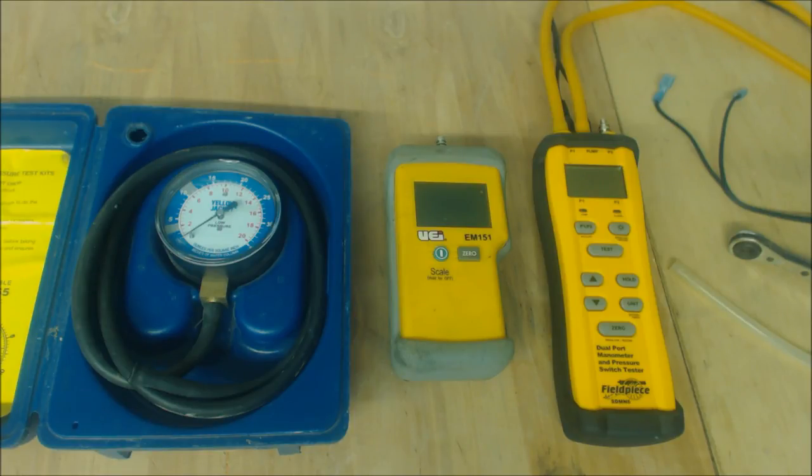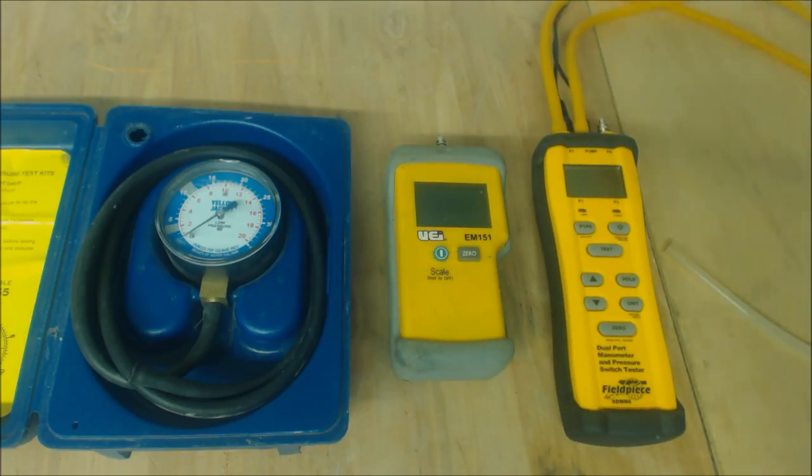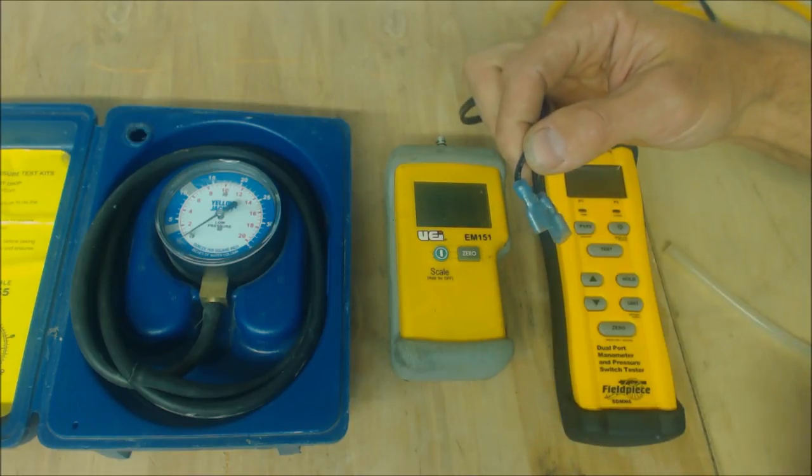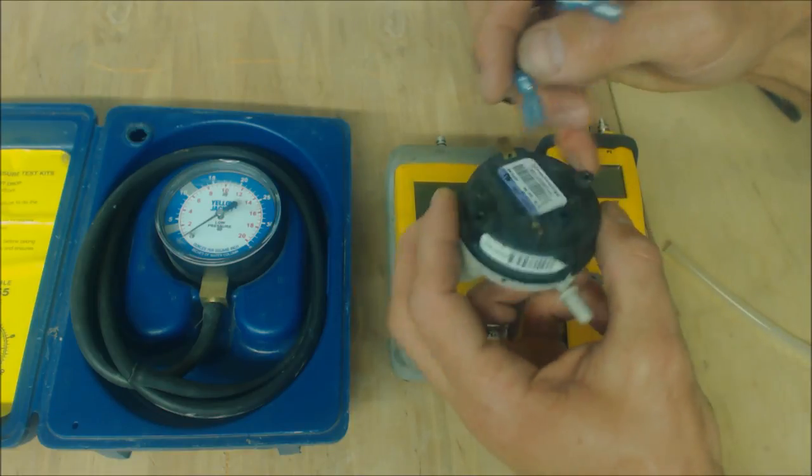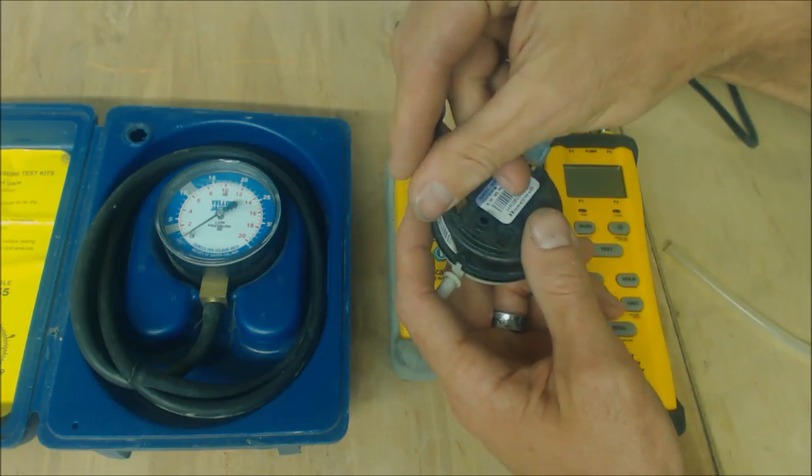The furnace will tell you what the maximum external static pressure needs to be, so we need an accurate water column manometer. We have these two wires that are going to go onto the pressure switch—in this case, this pressure switch we're using.